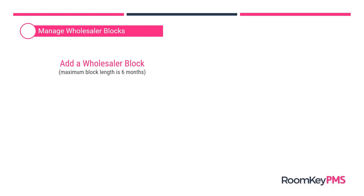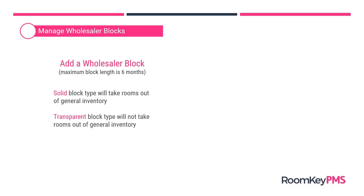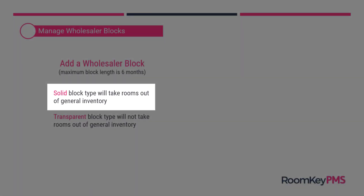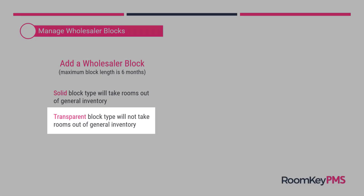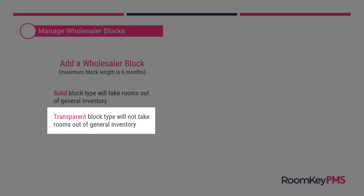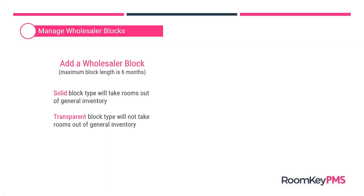Before showing how to do these steps, I'd like to go over some definitions we'll encounter during this process. The first set of definitions are the block types. We have the option of setting a solid block type or a transparent block type when creating a wholesaler block. A solid block type will take those rooms out of inventory and hold them aside for the wholesaler only — no other guests could access that inventory. A transparent block type allows the wholesaler to block rooms but does not take those rooms out of inventory, so wholesaler guests will be in competition with the general public for that inventory.